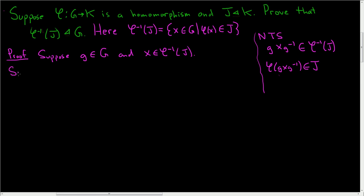So since X is in the inverse image of J, we have by definition, right, what does it mean to be in the inverse image? It's an X in G such that φ(X) is in J. So if X is in the inverse image, we have φ(X) in J.